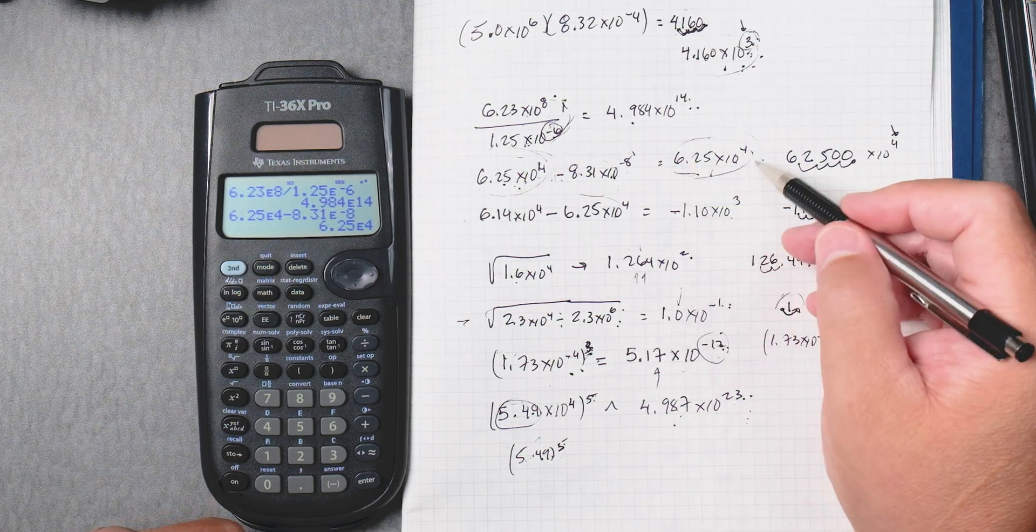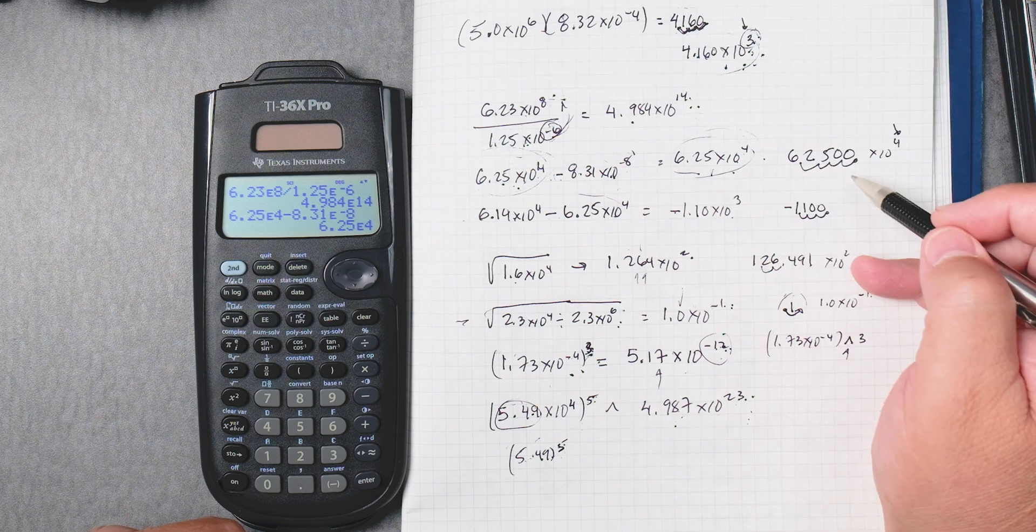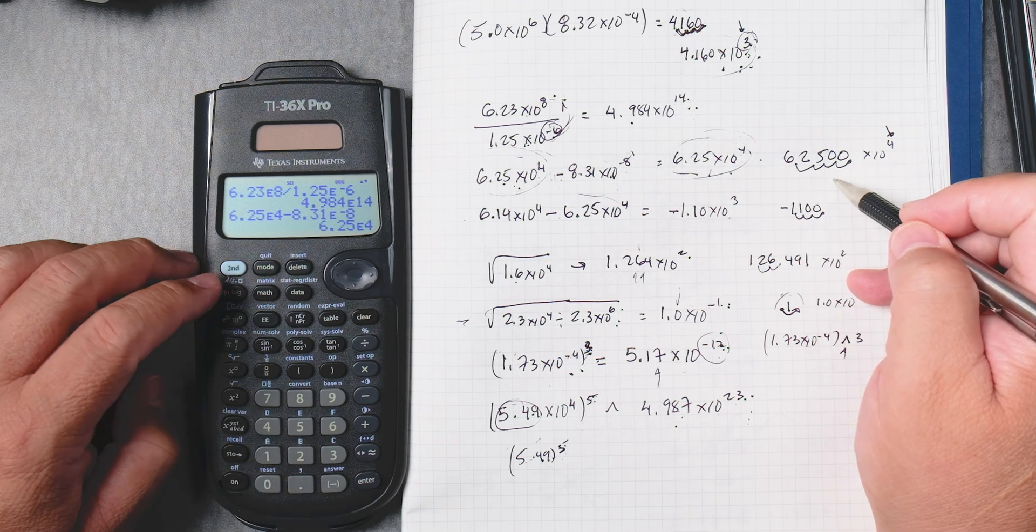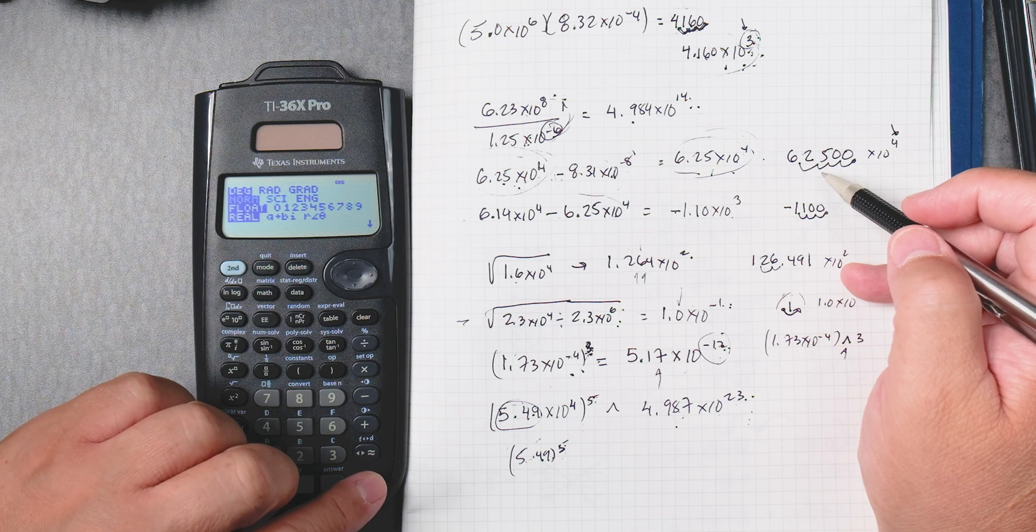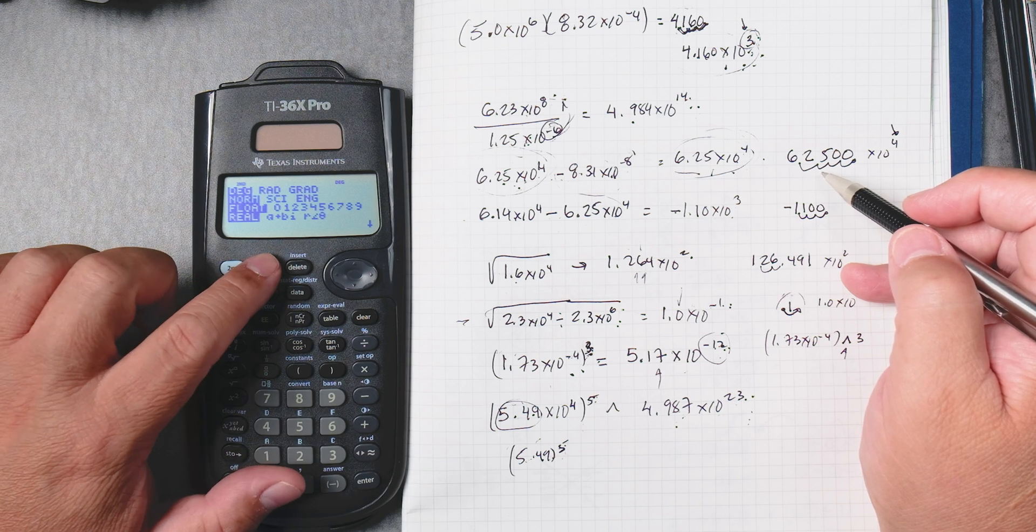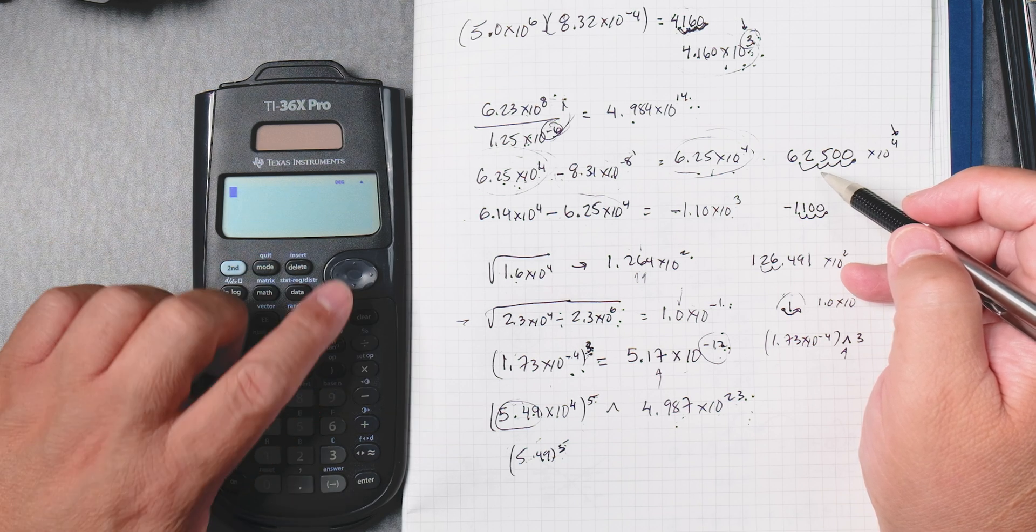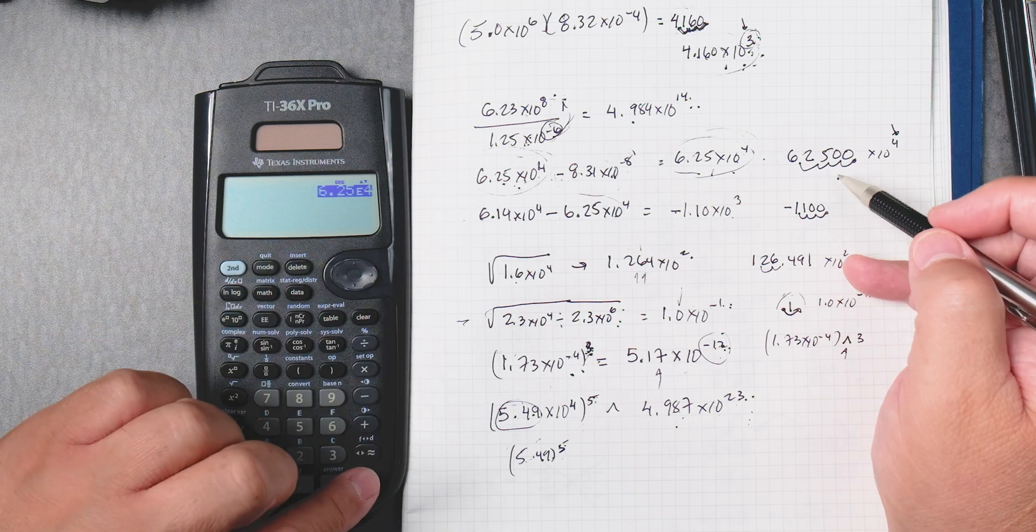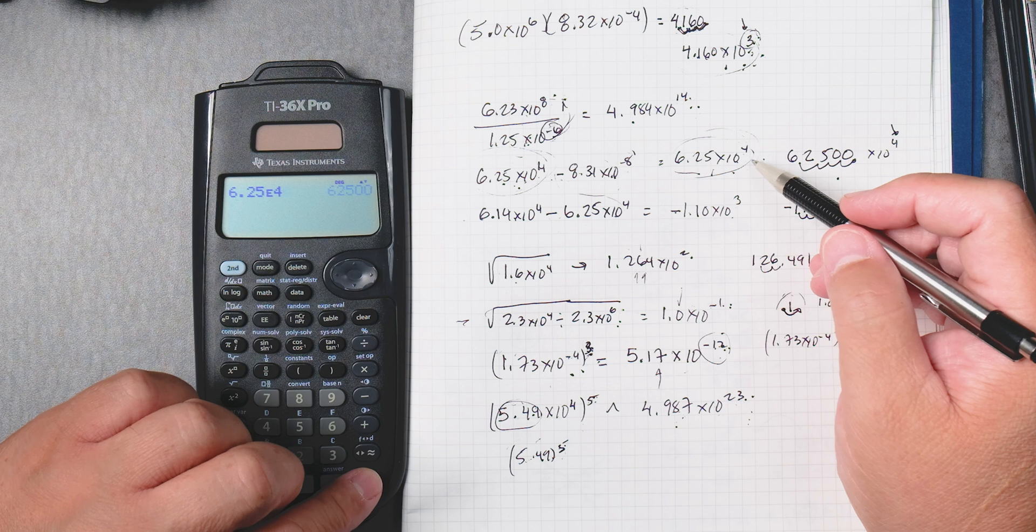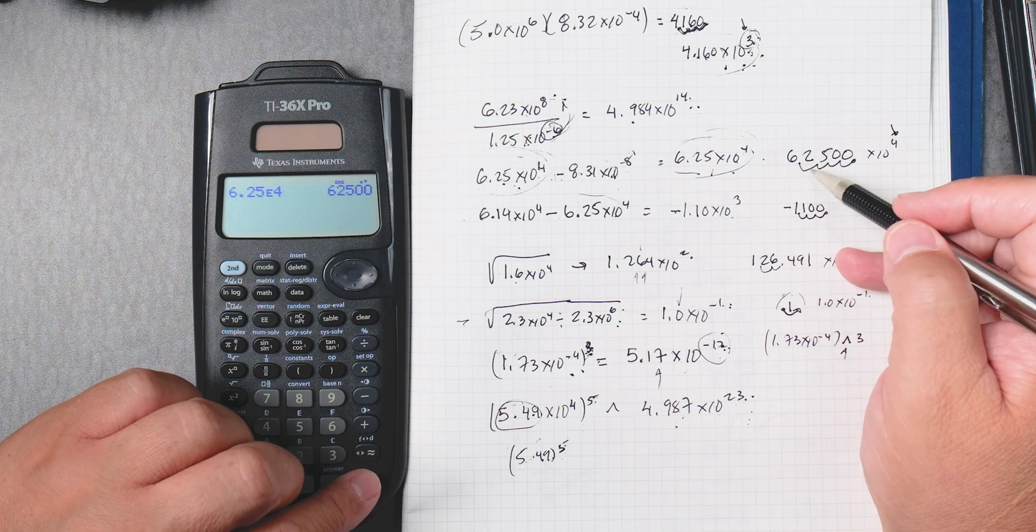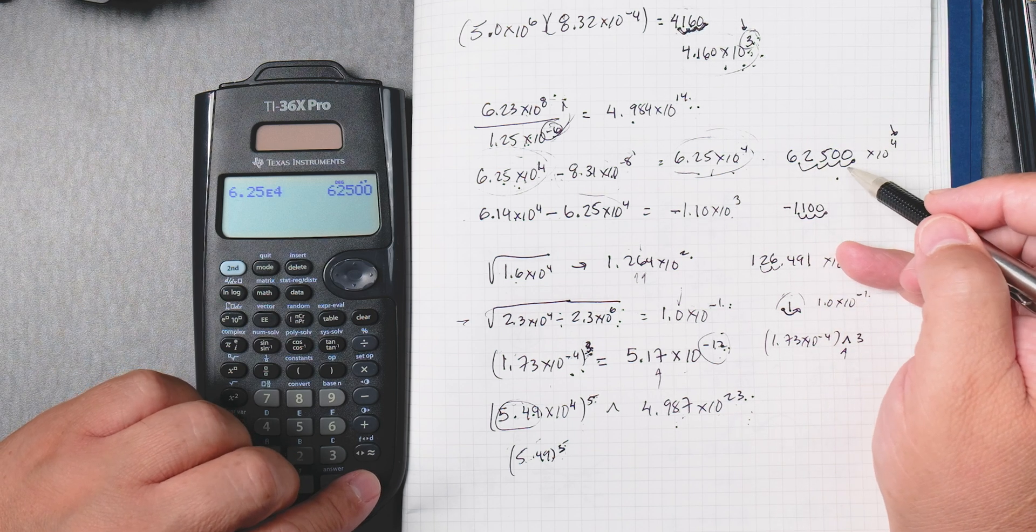Let's say I wanted to change this back into a regular number. We should be able to, with mode, then click on normal, enter, and then quit, second mode. And then we can go up to this value, 6.25 times 10 to the fourth. We enter. We enter again. And then we get 62,500.